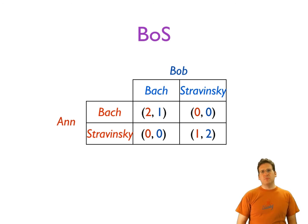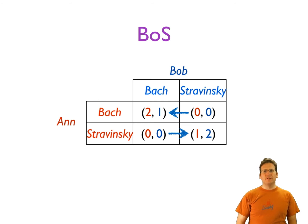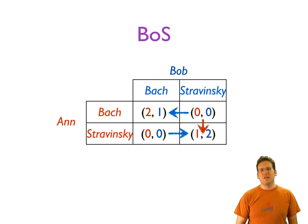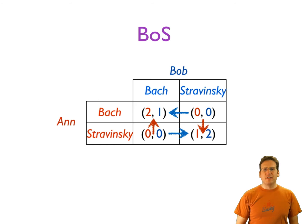Let's analyze the game. If you were Bob, what would you do? If Anne goes to the Bach concert, going to Bach gives Bob a payoff of one and going to Stravinsky gives zero — so Bob would go to Bach if Anne is going there. If Anne is going to Stravinsky, Bob would also go to Stravinsky to get two instead of zero. For Anne, she similarly wants to be wherever Bob is, especially at Bach since she really likes it. So do you see any dominant strategies? What Anne does depends on what Bob does, and vice versa — there are no dominant strategies in this game.